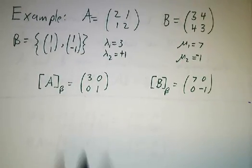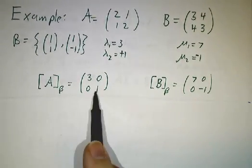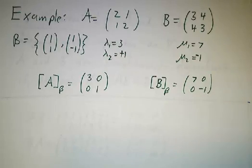If you work in the B basis, you find that the matrix of A in the B basis is (3,0,0,1). The matrix of B is (7,0,0,-1).